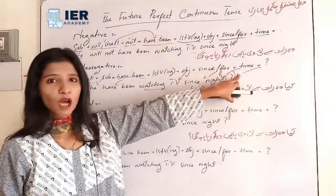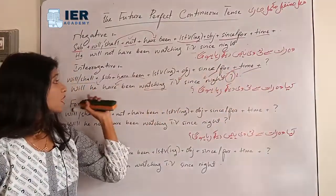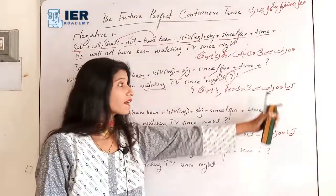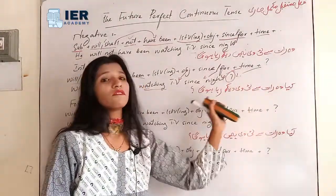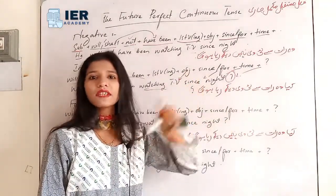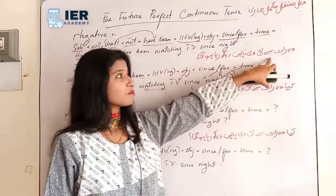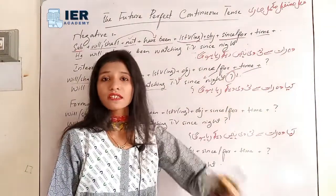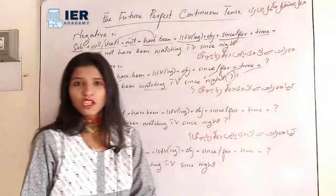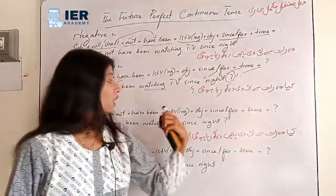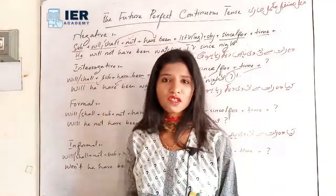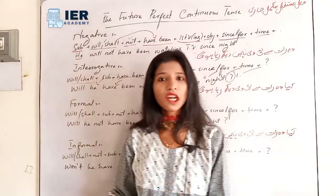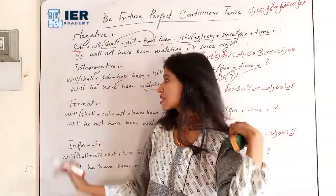Sentence: 'Will he have been watching TV since night?' — کیا وہ رات سے ٹی وی دیکھ رہا ہوگا؟ Earlier the simple was: he will have been watching TV since night. Negative was: he will not have been watching TV since night. Now interrogative asks: will he have been watching TV since night?